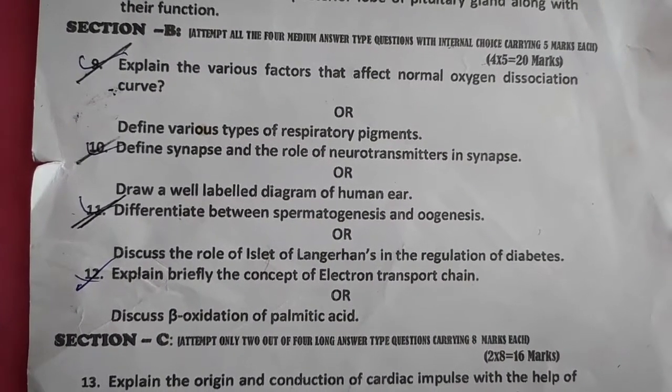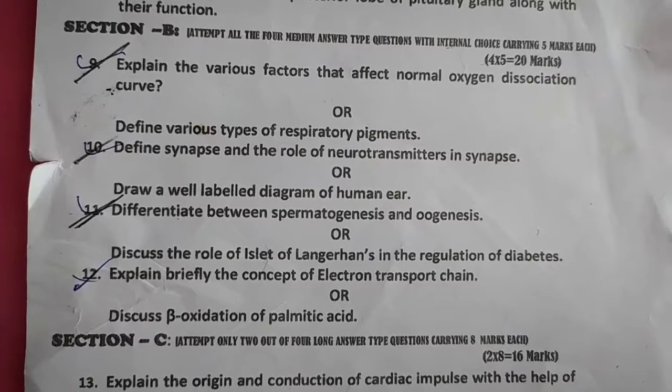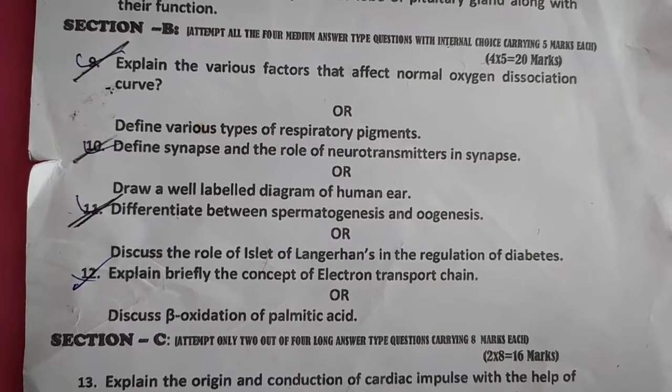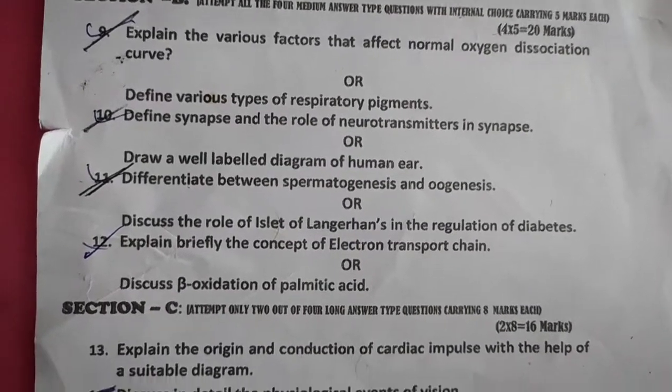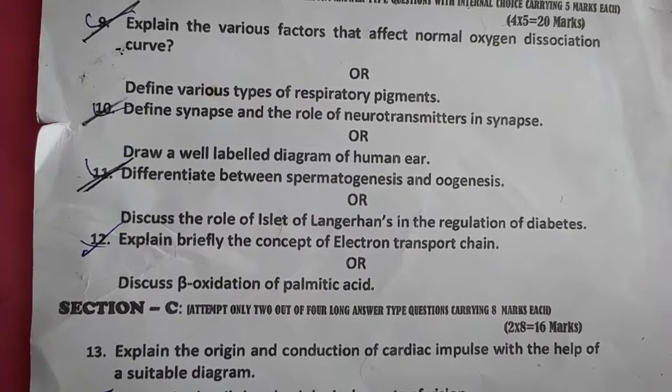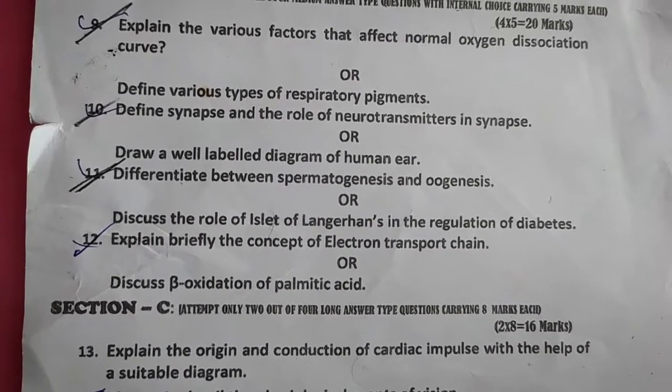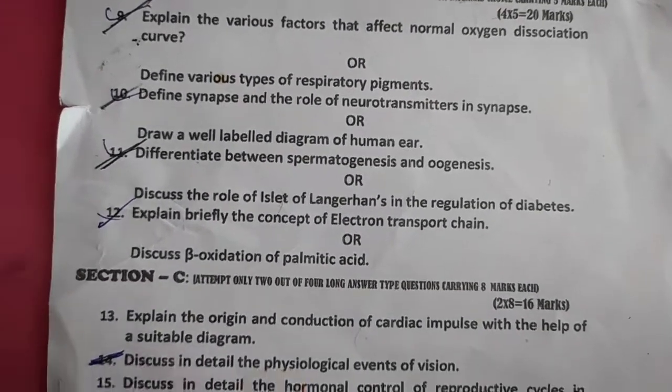Question number 12. Explain briefly the concept of the electron transport chain. Or, discuss beta-oxidation of palmitic acid.